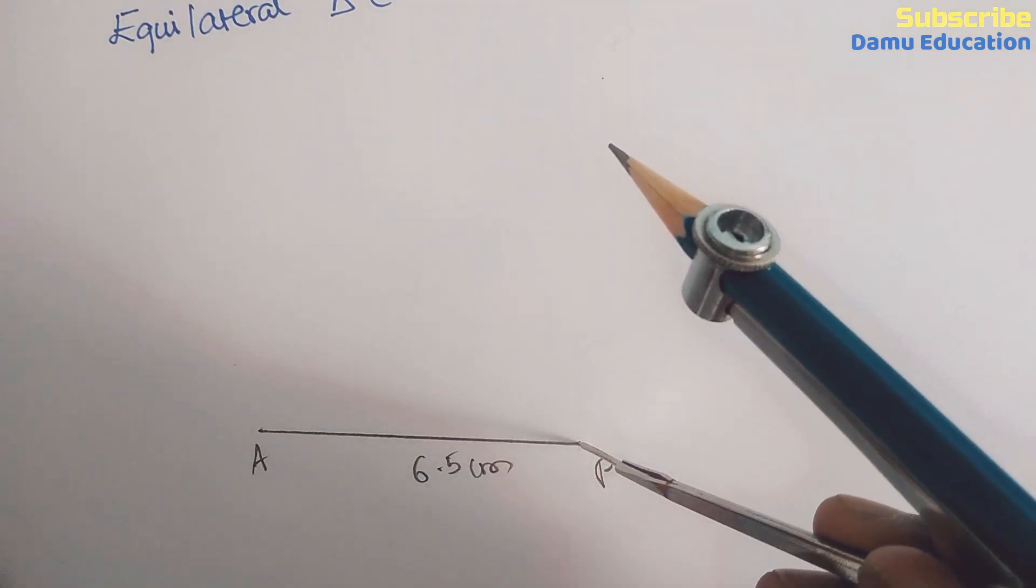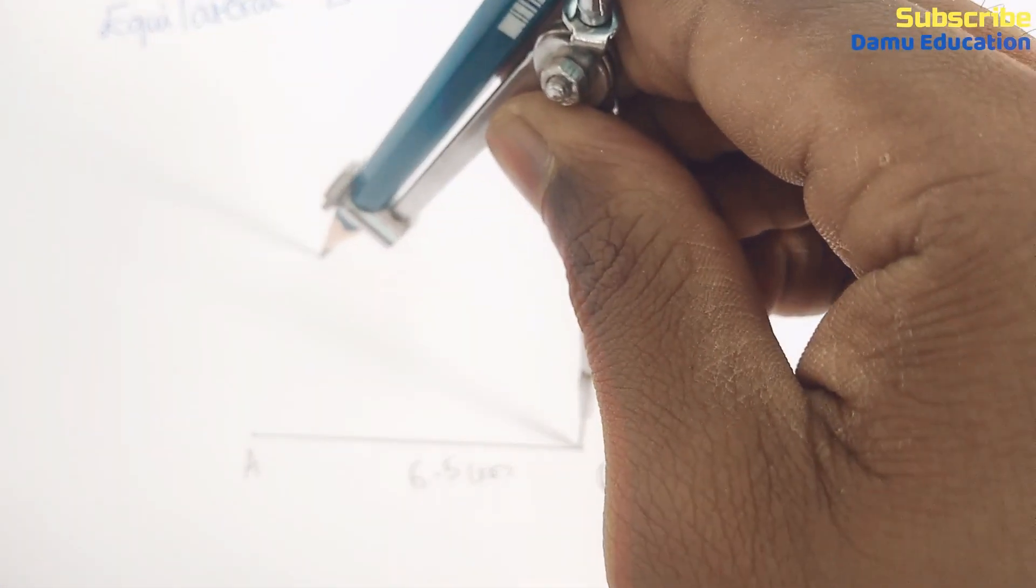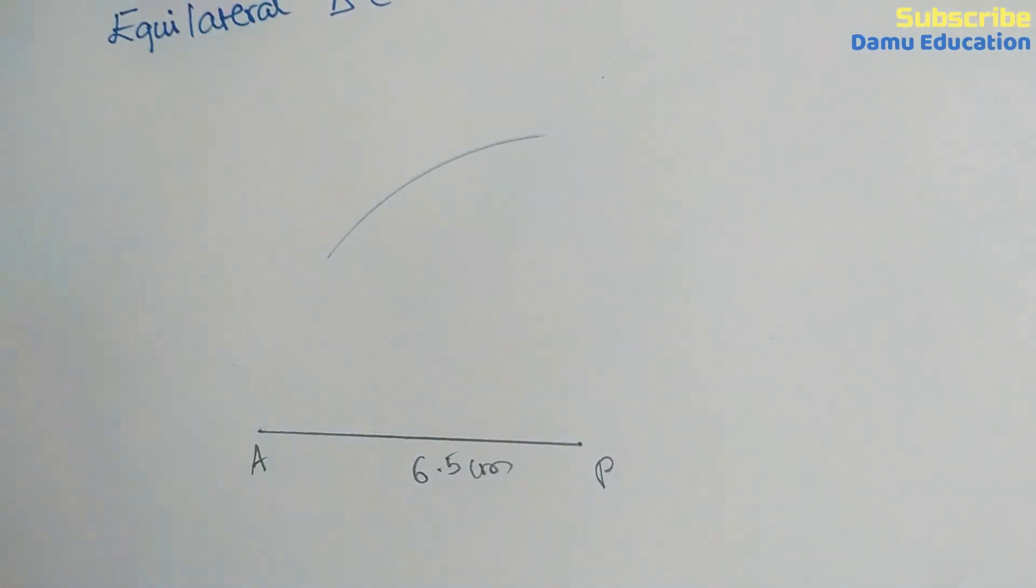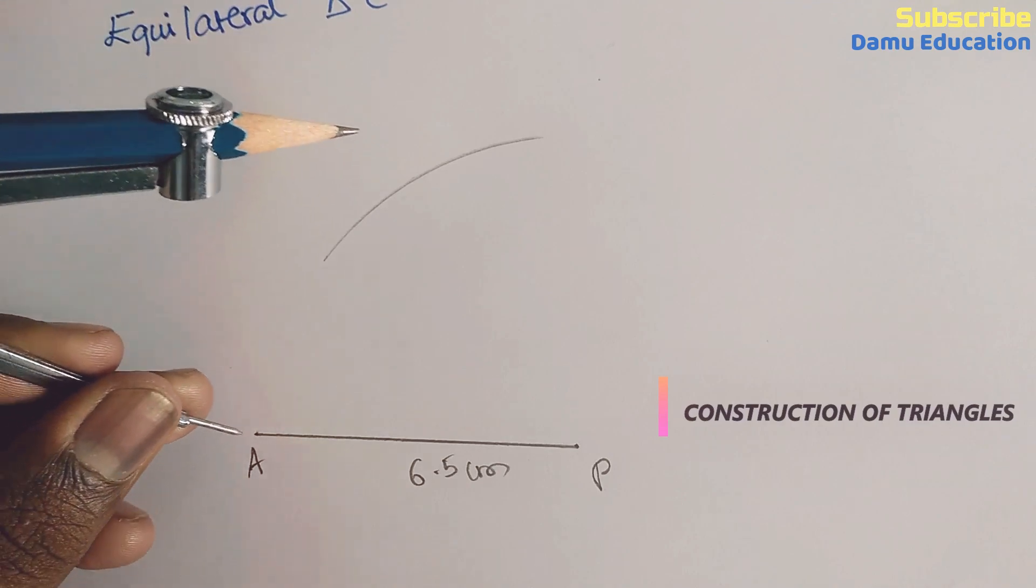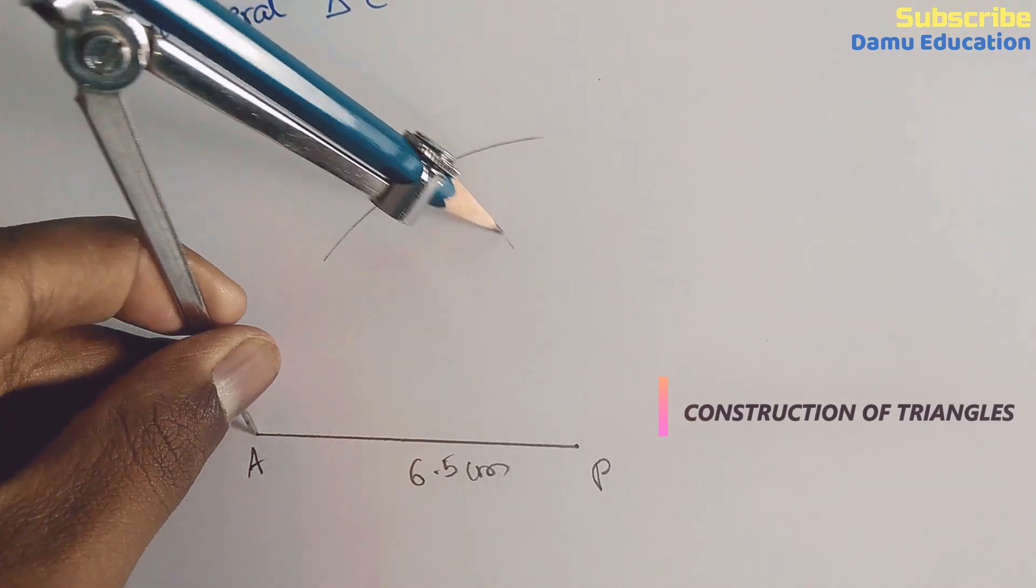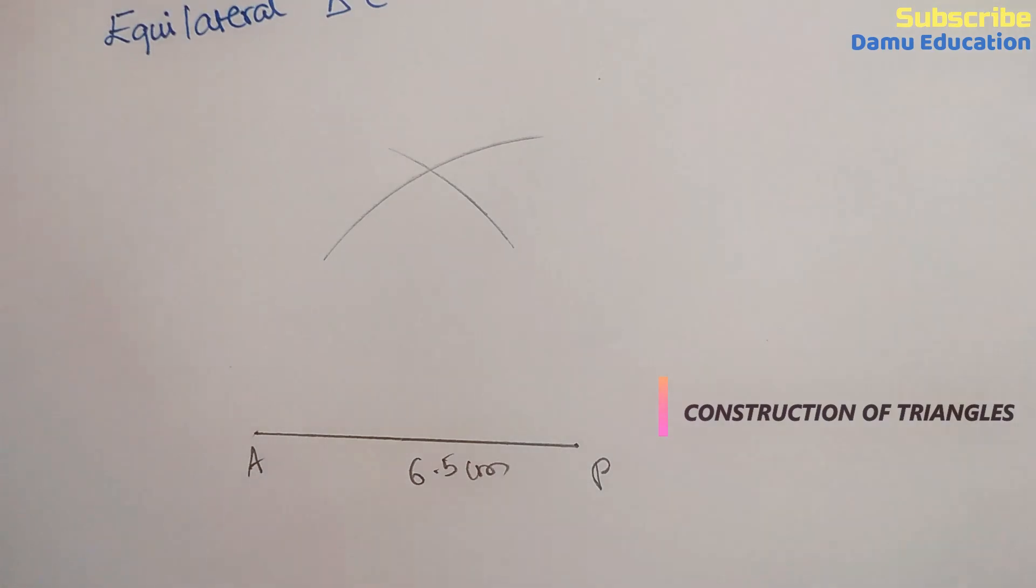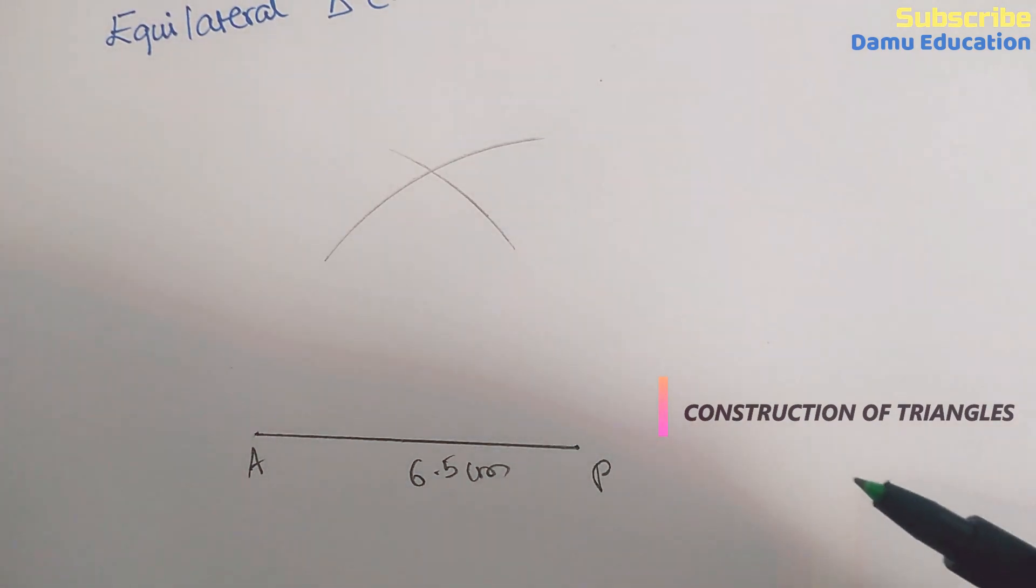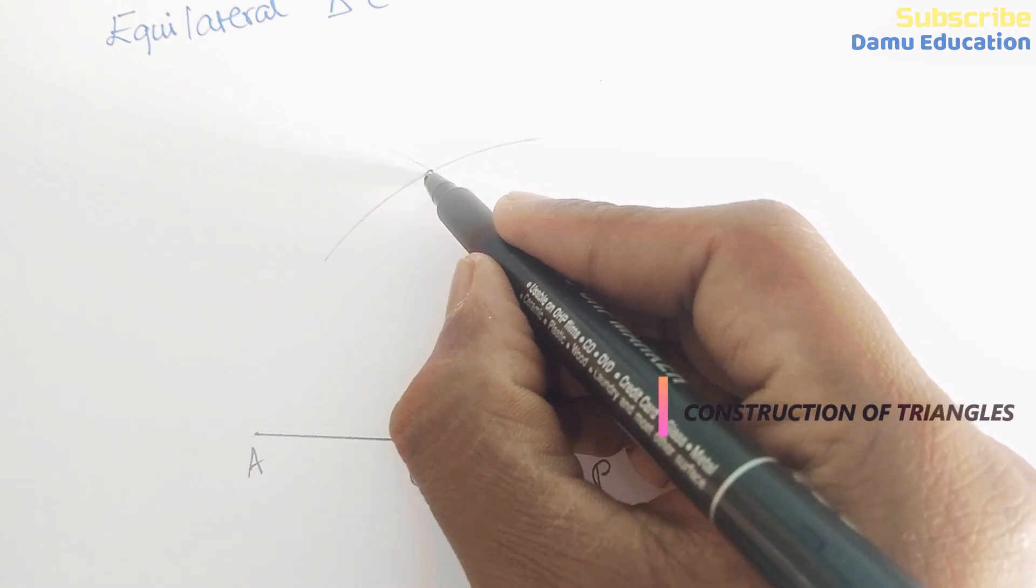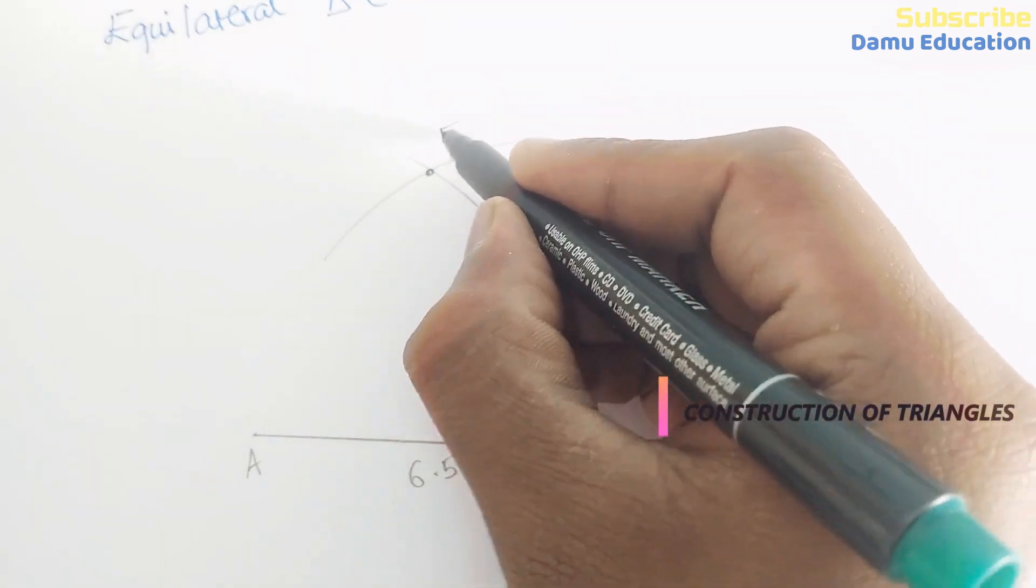AE, that is also 6.5 centimeter. A as a center, draw another arc. Where the two arcs coincide, that point is E.